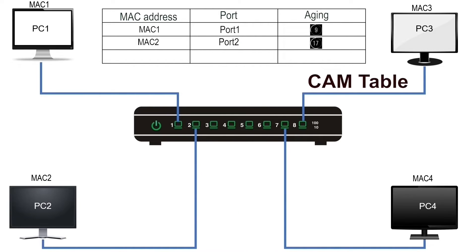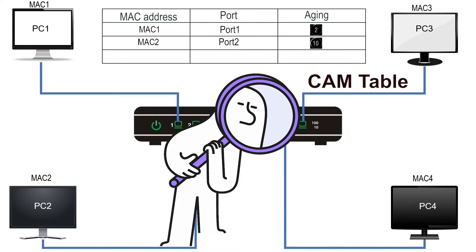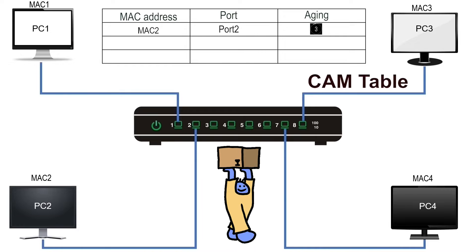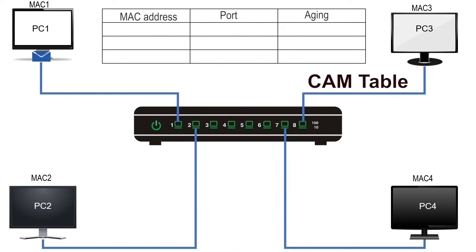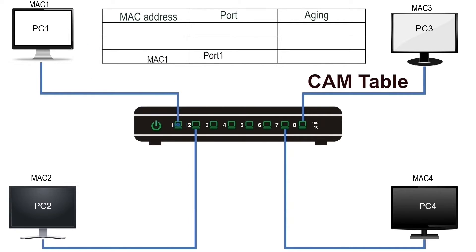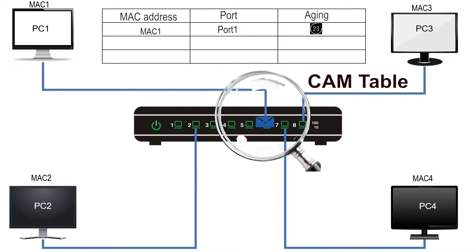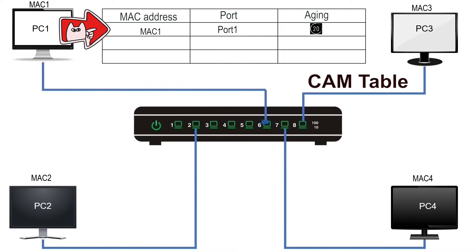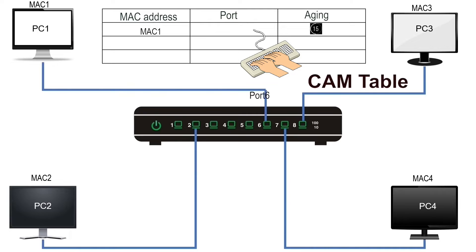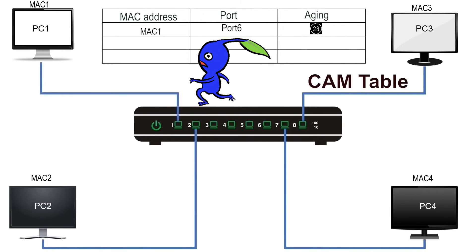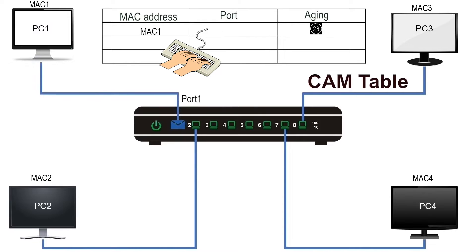There is one more possible situation. If the switch finds an entry for the source MAC address with different port information, it assumes that the device has been relocated. For example, PC1 sends a frame to PC4 and the switch receives it on port 1. Since the table has no entry for PC1's MAC address, the switch adds a new entry for it. Now suppose you move PC1 from port 1 to port 6. PC1 sends a frame; it reaches the switch on port 6. The switch finds PC1's MAC address in the table, but with a different port number. In this situation, the switch updates the port information along with the timer. If we move PC1 back to port 1, the switch updates the associated port in the CAM table again.